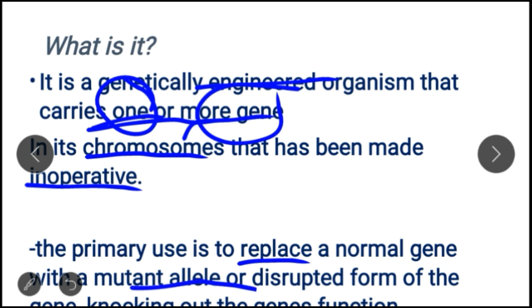The primary use of making a knockout mouse is to replace a normal gene with a mutant allele or a disrupted form of the gene, thereby knocking out the gene function. You either replace a normal gene with a mutant allele or you disrupt the coding part of that gene. That is the basic procedure of a knockout, and the product is called a knockout mouse.